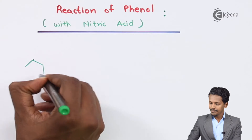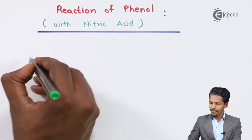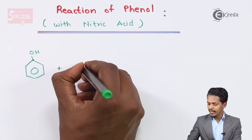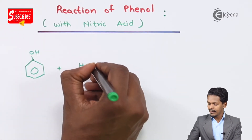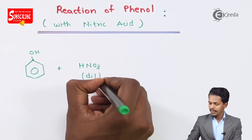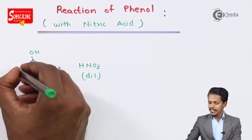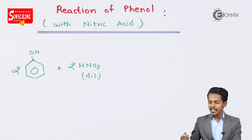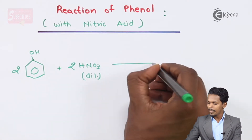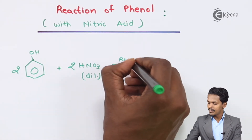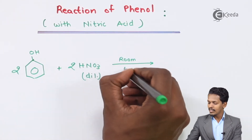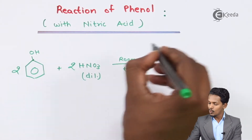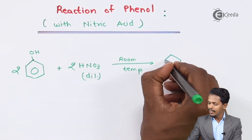If we treat phenol with diluted HNO3, in this case 2 moles of phenol react with 2 moles of HNO3 at room temperature. At room temperature the reaction occurs in such a manner that we get a mixture of products.